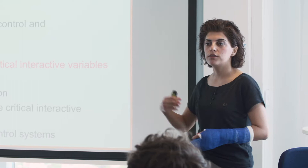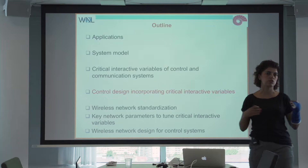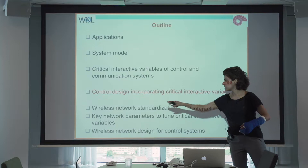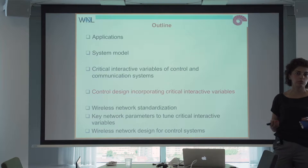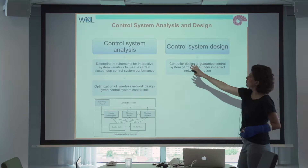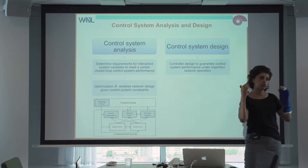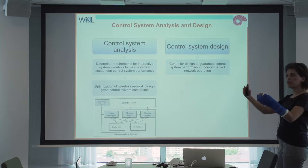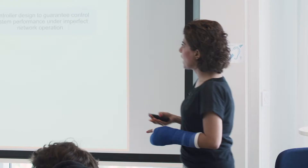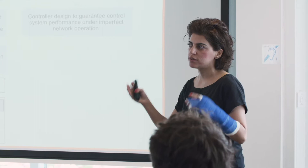Today we will look at the control system design — how can we incorporate these critical interactive variables in the control system design — and then the wireless network part, including wireless network standardization for cyber physical systems and how we can tune the parameters so that we have some control on the probabilistic distribution of these critical interactive variables.